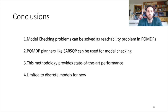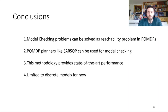To summarize: model checking problems can be solved as a reachability problem in POMDPs, and by relying on this, we can reuse the whole POMDPs.jl ecosystem to build a model checking library. Powerful planners like SARSOP lead to state-of-the-art performance in model checking. There are some limitations to this approach — for now it is limited to discrete models, but we are working on extending it to continuous space problems. Thank you for watching.